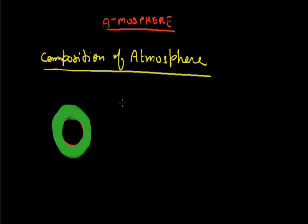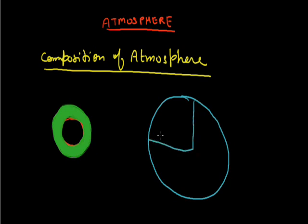This blanket is made up of many gases which are, for example, out of total 100% gases, the maximum gas is nitrogen which is 78% approximately.